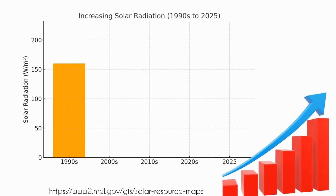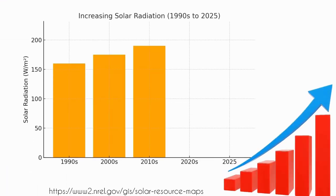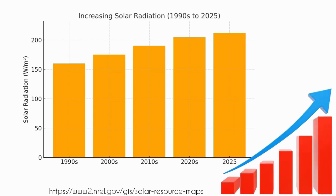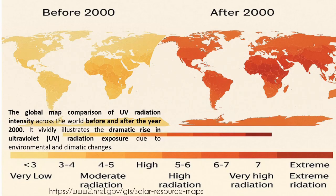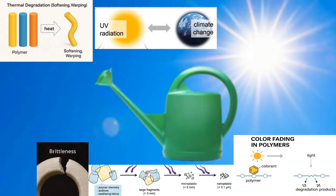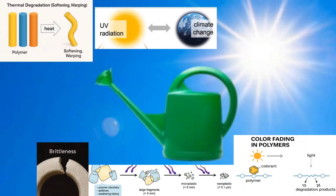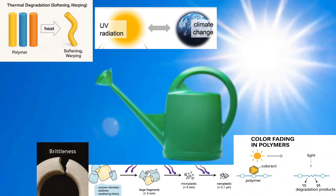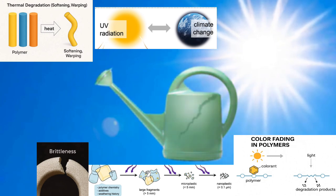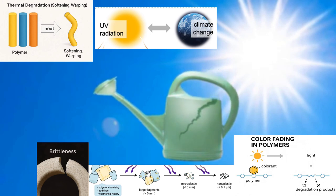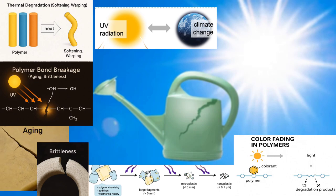Here is a graph showing increasing solar radiation over the years, and a global map comparing UV radiation densities across the world. Over time, polymers degrade — meaning their structure breaks down under environmental factors like UV radiation, especially UVB, mechanical stress, heat, and moisture — which leads to plastic cracking, becoming more brittle, and fragmenting into micro and nano plastics.